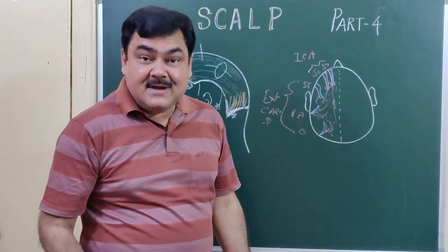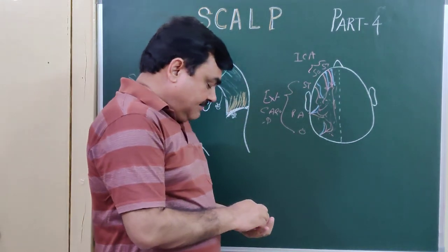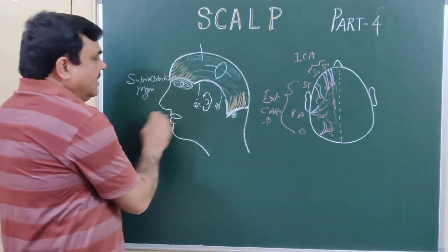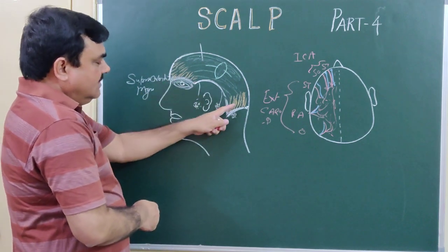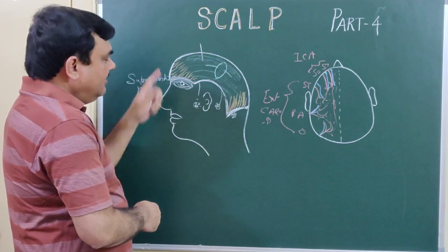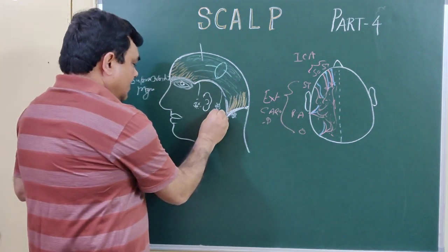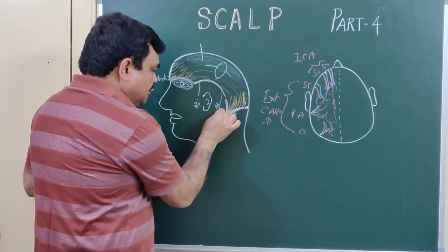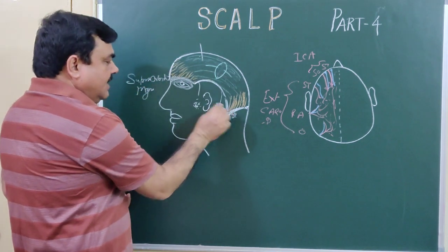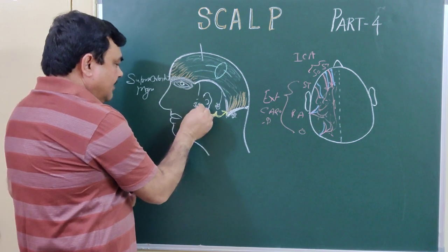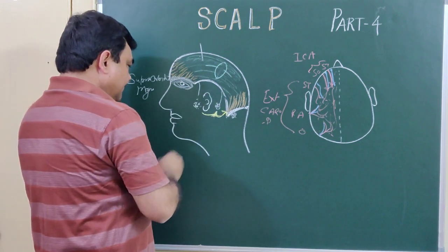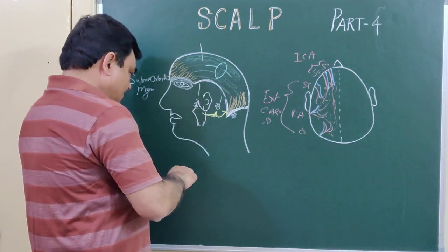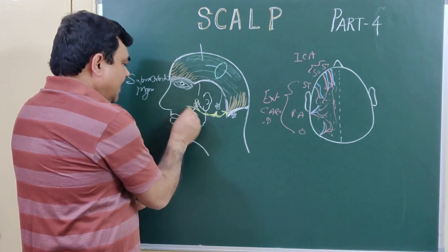Now, scale part 4 — nerve supply of the scalp. The scalp is supplied by both motor and sensory nerves. In this diagram you can see the occipitofrontalis muscle: this is the occipital belly and this is the frontal belly. Here is the facial nerve — it passes through the parotid gland and gives branches.